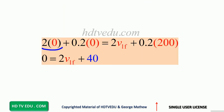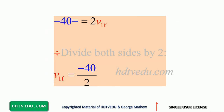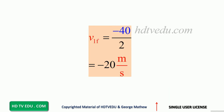Momentum of the gun before firing: zero. Momentum of the bullet before firing: zero. Momentum of the gun after firing: 2 times V1F. Momentum of the bullet after firing: 0.2 times 200 equals 40. So 2·V1F plus 40 equals 0. Subtract 40 from both sides: negative 40 equals 2·V1F. Divide both sides by 2 and you get negative 20 meters per second.